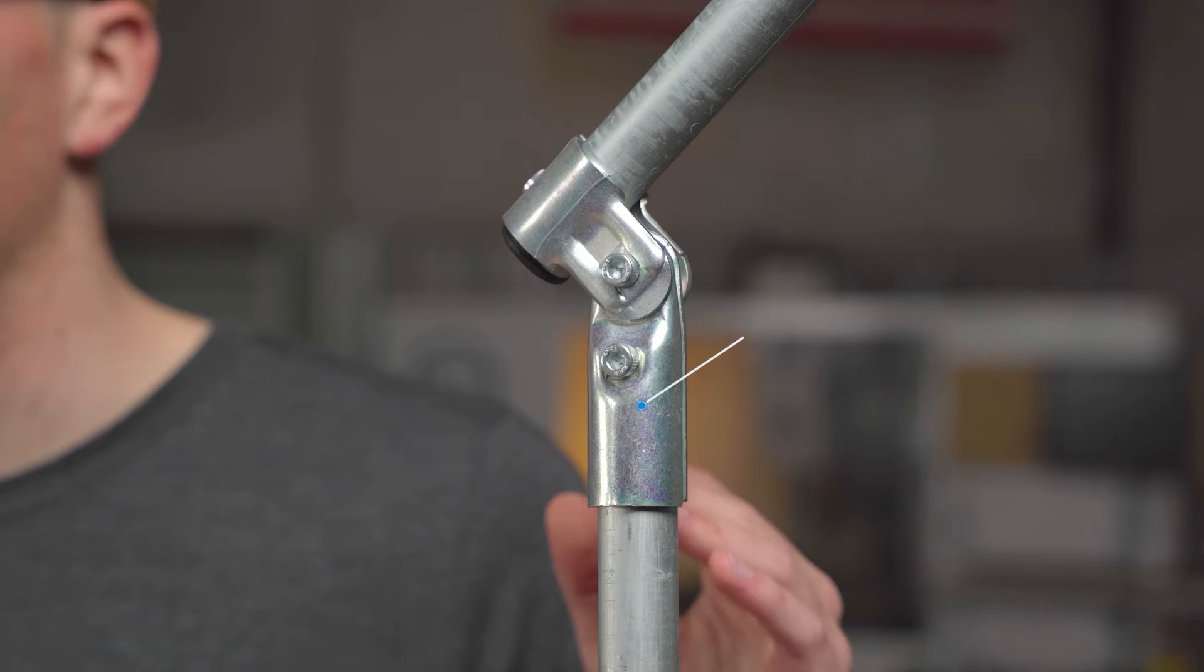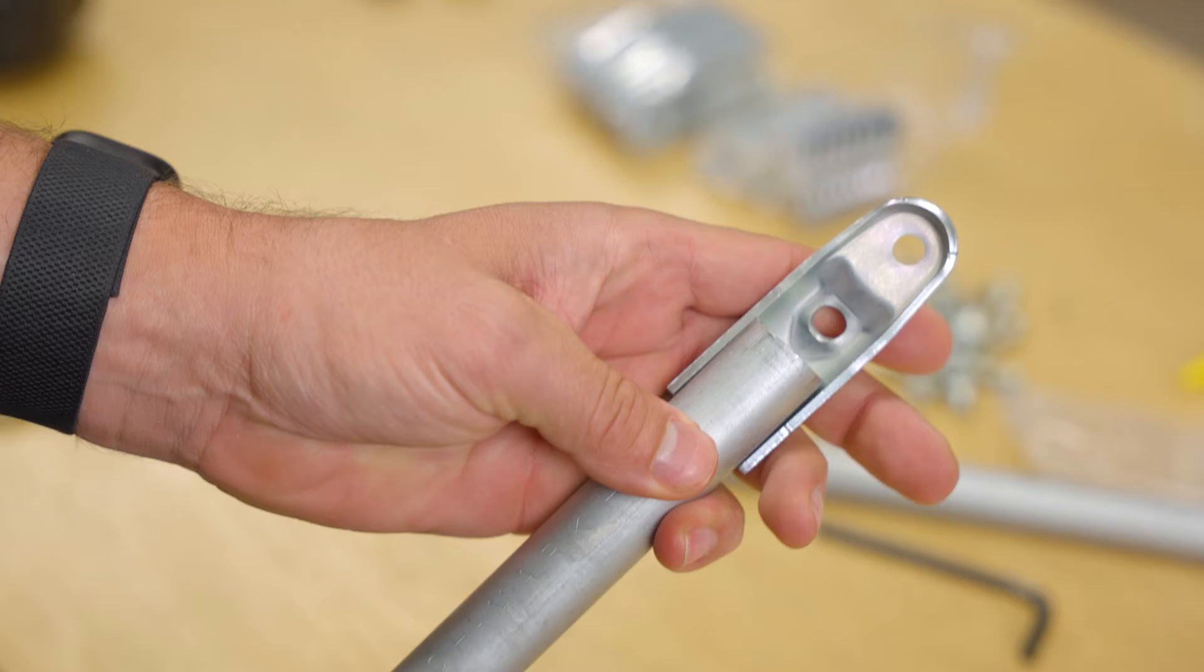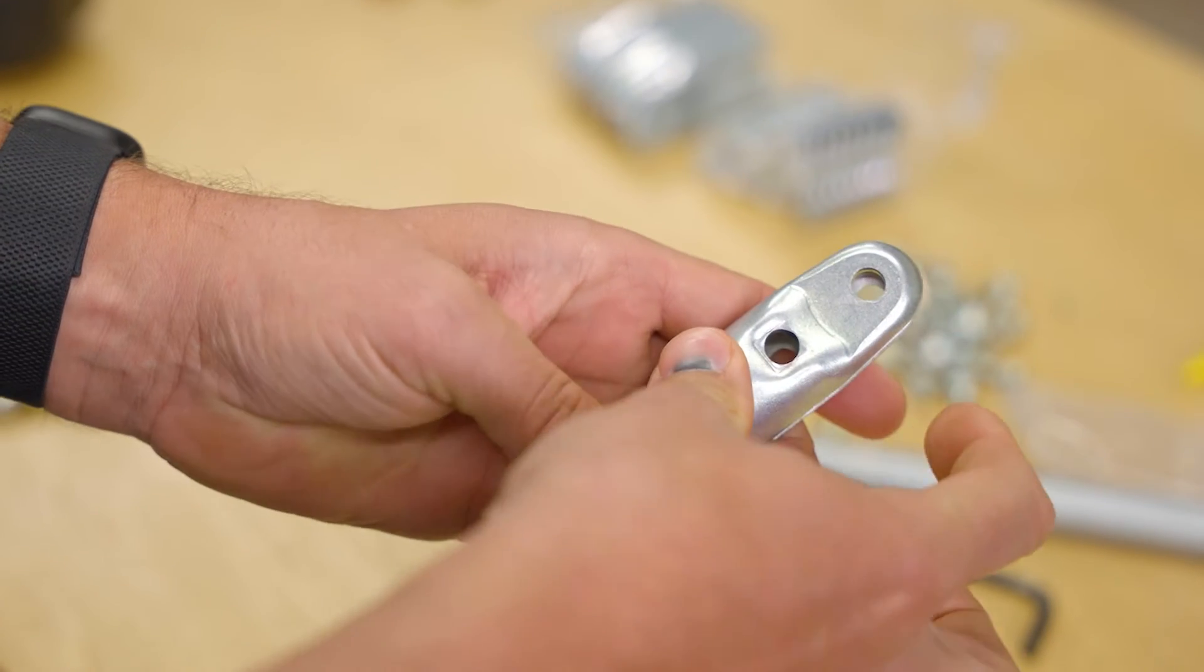We call the bottom half of the adjustable angle connector the end clamp because it grabs onto the very end of a piece of conduit.